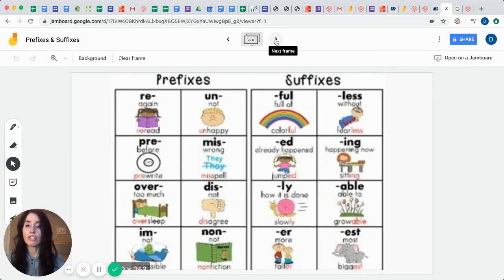Okay, so these are just real basic ones that you've been learning. These are part of our chart of prefixes and suffixes. Re means again, like in the word reread. Un means not, like in the word unhappy. Pre means before, like in the word pre-write. Miss means wrong, like in the word misspell. Over means too much, like in the word oversleep. Dis means not, like in the word disagree. Im means not, like in the word impossible. Non means not, like in the word nonfiction. I know I've taught a lot of these different words to you boys and girls. So this should be a piece of cake.